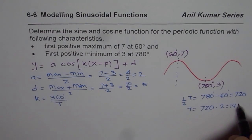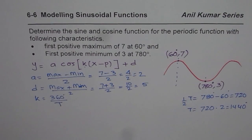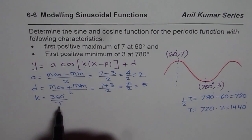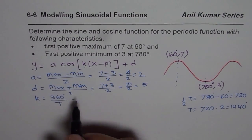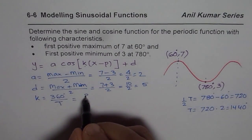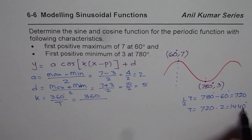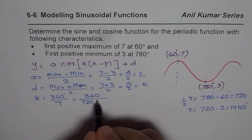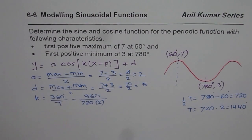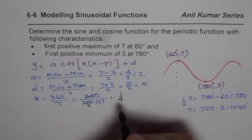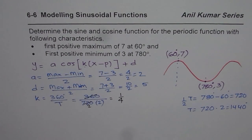So the time period is 1440. In our equation, k = 360° divided by the time period. Writing it as 360 / (720 × 2) makes it easy to simplify: 360 goes into 720 twice, giving k = 1/4. So we now have k = 1/4.